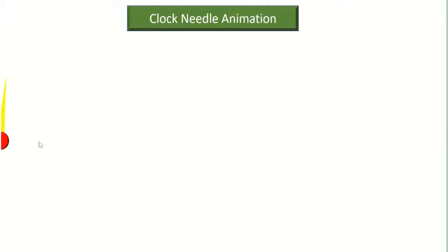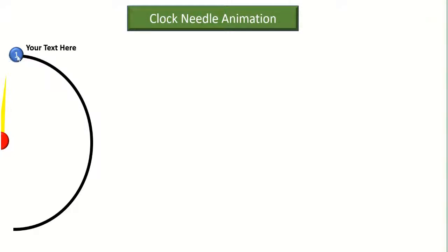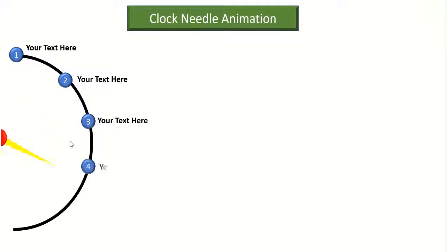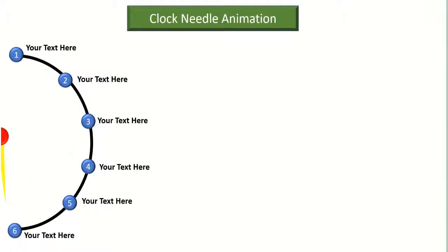Hey guys, what's up. In this video we will see the clock needle animation. A needle will appear that will move through a circular arc covering all the points that you have written. The first point will appear, then the needle will move to the second point, then to the third, fourth, fifth, and sixth point. You can write as many points as you want over this dial.